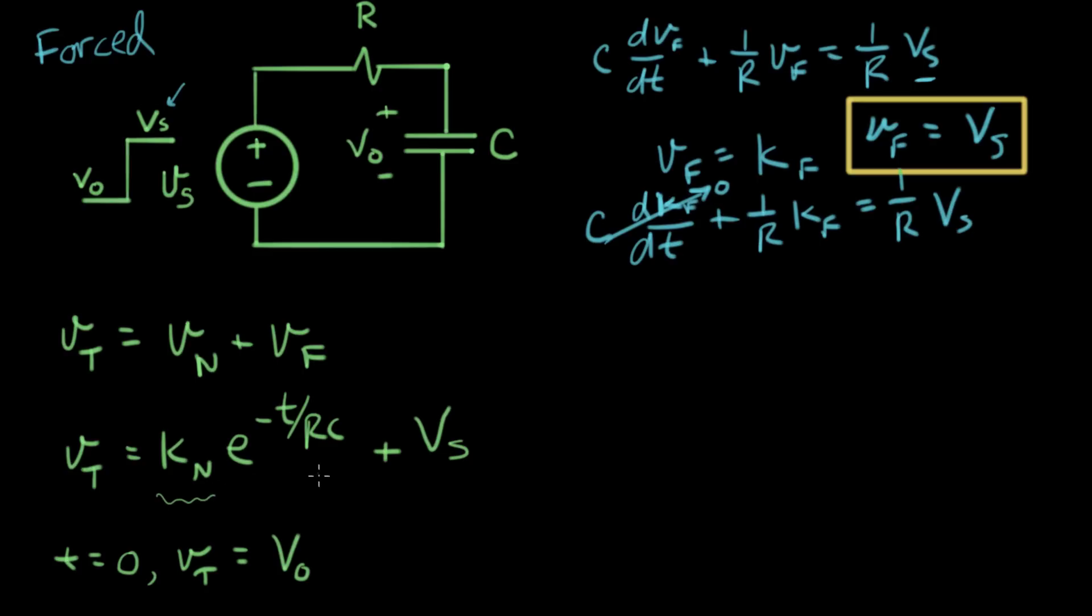All right, let's go back to our total solution and plug in these two values, time is zero, and VT equals V naught, so that looks like V naught equals natural constant times e to the minus zero over RC plus VS.